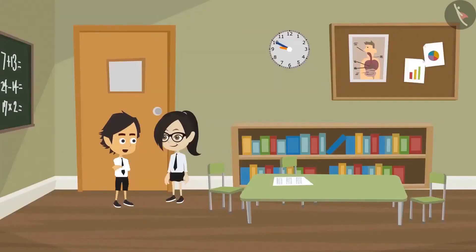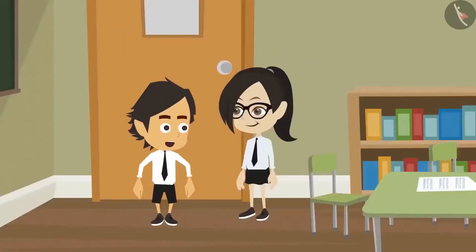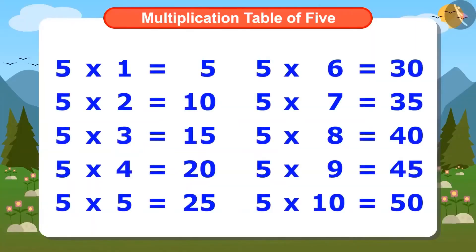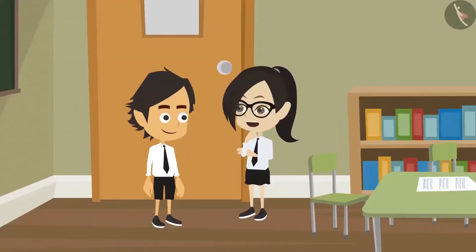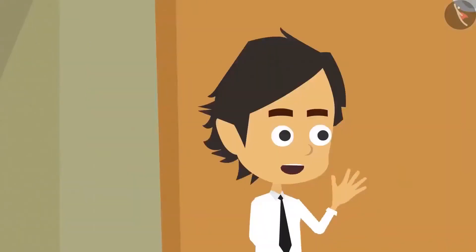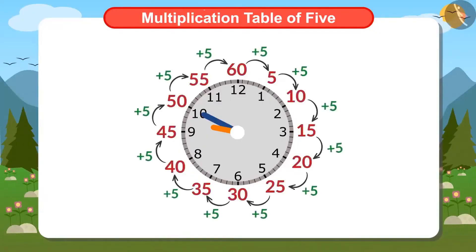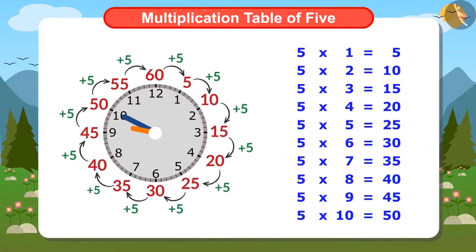Hey Vandana, you don't need to count. Then how will we find out how many minutes have passed? I use the multiplication table of 5. What is the relation between counting minutes and the multiplication table of 5? There is a direct relation — see, the difference between all these numbers is 5, and the difference between the numbers in the multiplication table of 5 is also 5.